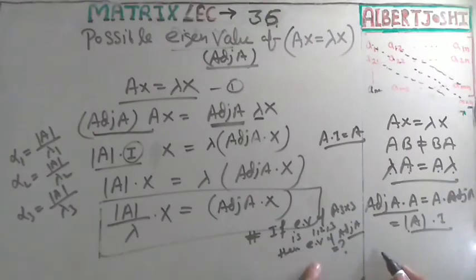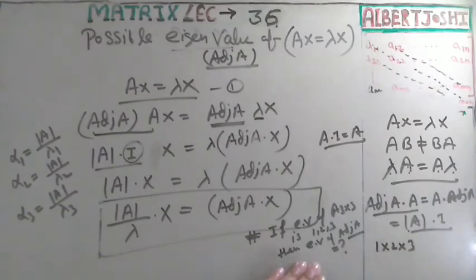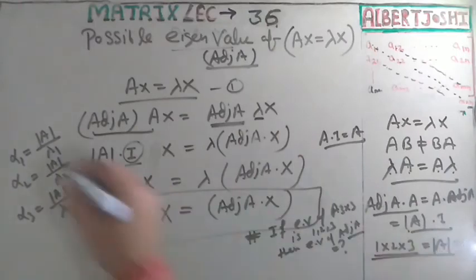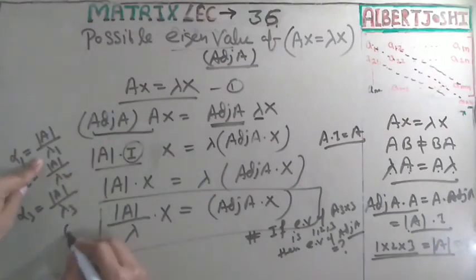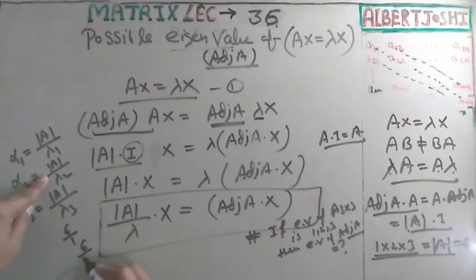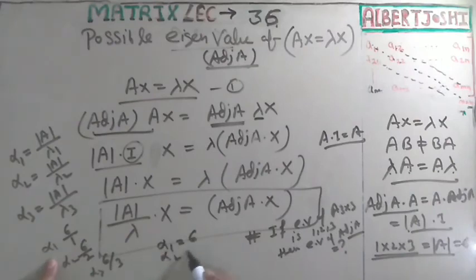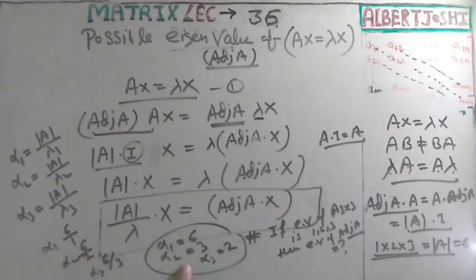Recall that the product of all eigenvalues equals the determinant of A. So det(A) = 1 × 2 × 3 = 6. Therefore: α₁ = 6/1 = 6, α₂ = 6/2 = 3, and α₃ = 6/3 = 2. These are the eigenvalues of adjoint of A.